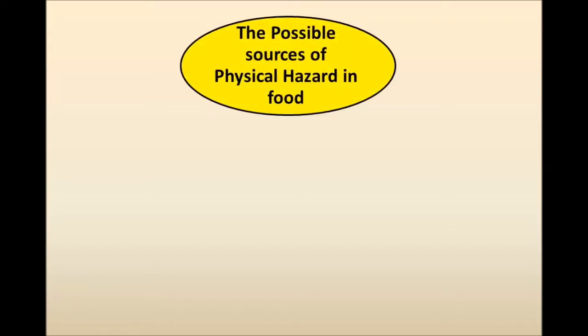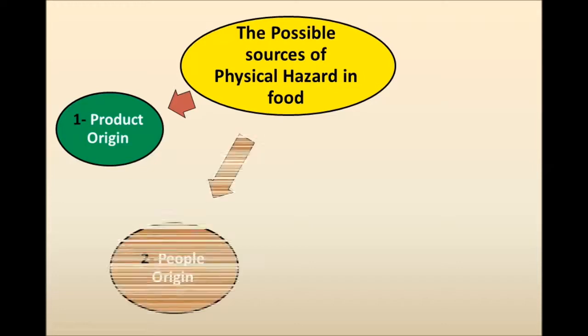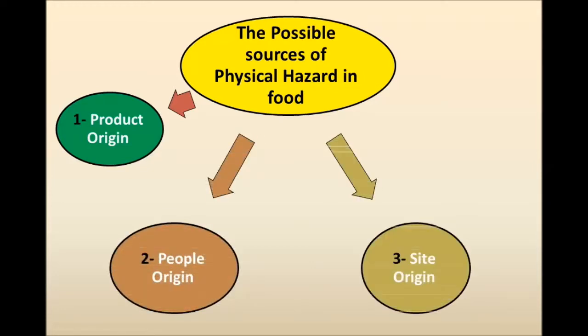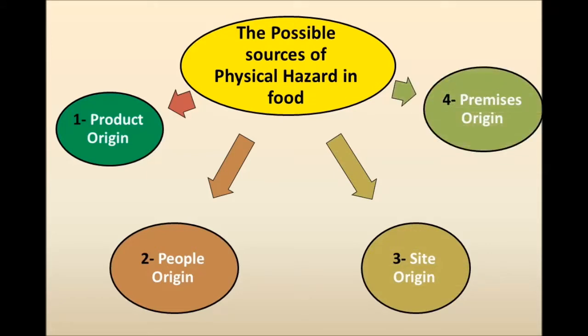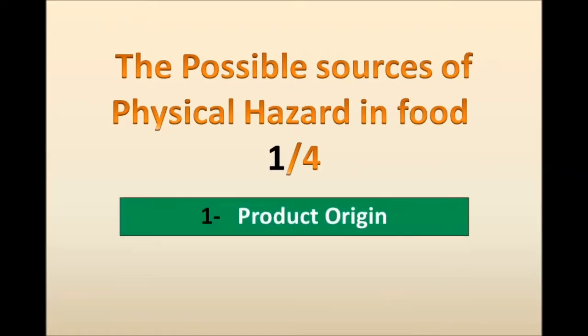Hello everybody, again on SimplyFodia YouTube channel. Today we will continue the explanation of hazards. We will start with physical hazards. First of all, we must know that there are four types of possible sources of physical hazard in food: number one, product origin; number two, people origin; number three, site origin; and number four, premises origin. Today we will only explain number one: the product origin.